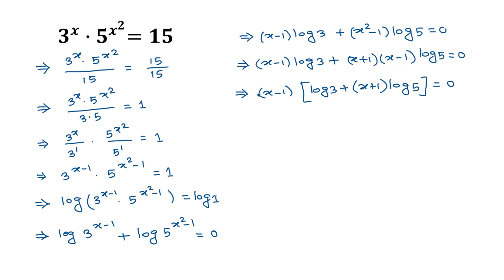So either (x minus 1) equals 0, or log 3 plus (x plus 1) times log 5 equals 0. When x minus 1 equals 0, the value of x is equal to 1. That is our first solution.